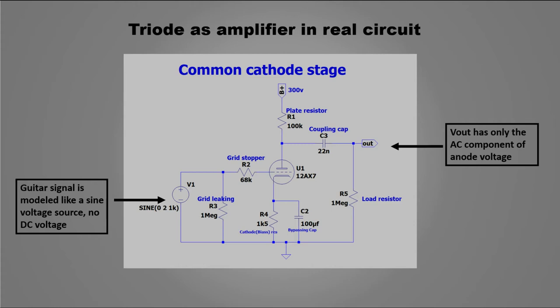In the circuit appear two capacitors. C2 is the cathode capacitor or bypassing cap. It is needed for two things. One is maintain constant the cathode voltage.